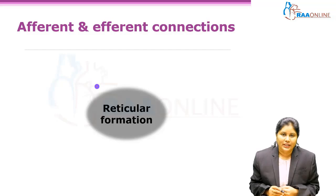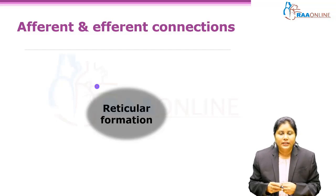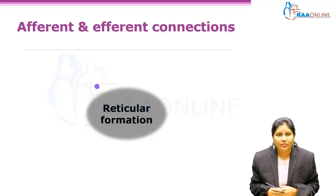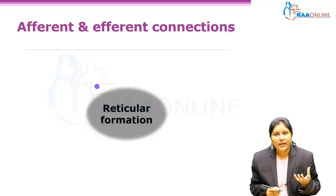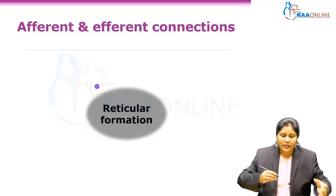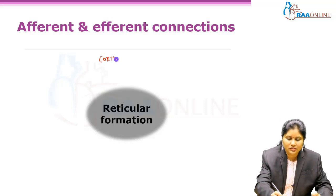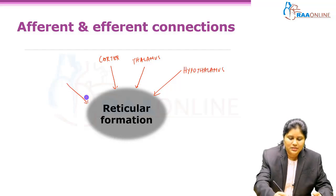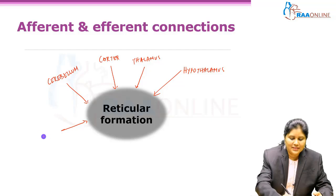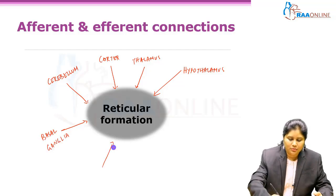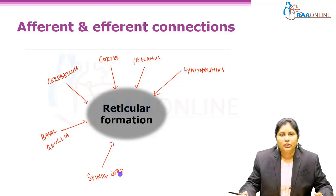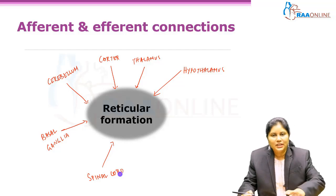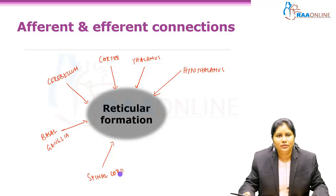Coming to the afferent and efferent connections: the reticular formation connects to almost all parts of the brain. Its afferent connections — that is, from where it receives information — include the cortex, hypothalamus, cerebellum, basal ganglia, and spinal cord. Most of these structures give afferent information to the reticular formation.